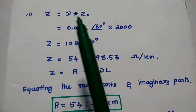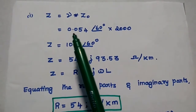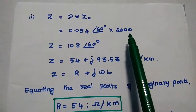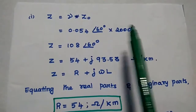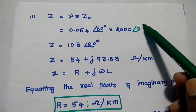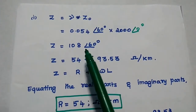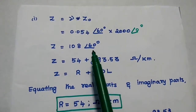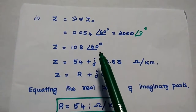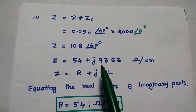Next, we find Z equal to 0.054 with angle 60 degrees multiplied by the characteristics impedance 2000. We multiply the magnitude values, and the characteristic impedance has angle 0 degrees. So 0.054 into 2000 is 108, and 60 plus 0 is 60. Therefore Z is equal to 108 with angle 60 degrees, which is in polar form and must be converted to rectangular form.